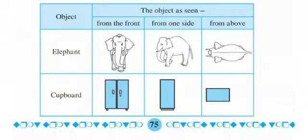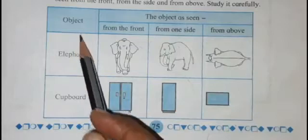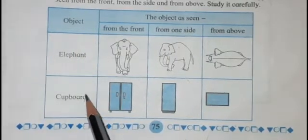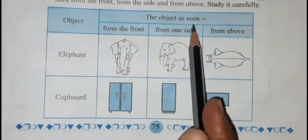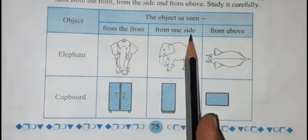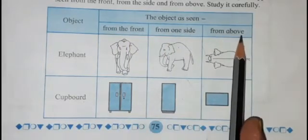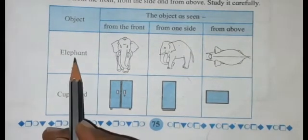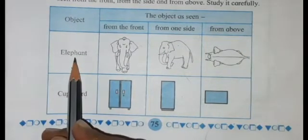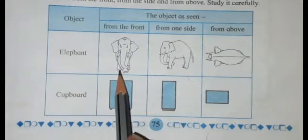Now we will see the chart from page number 75 of the Mass Textbook. The chart shows how three-dimensional objects appear when seen from the front, from the side, and from above. The objects shown are an elephant and a cupboard, seen from the front, from one side, and from above.